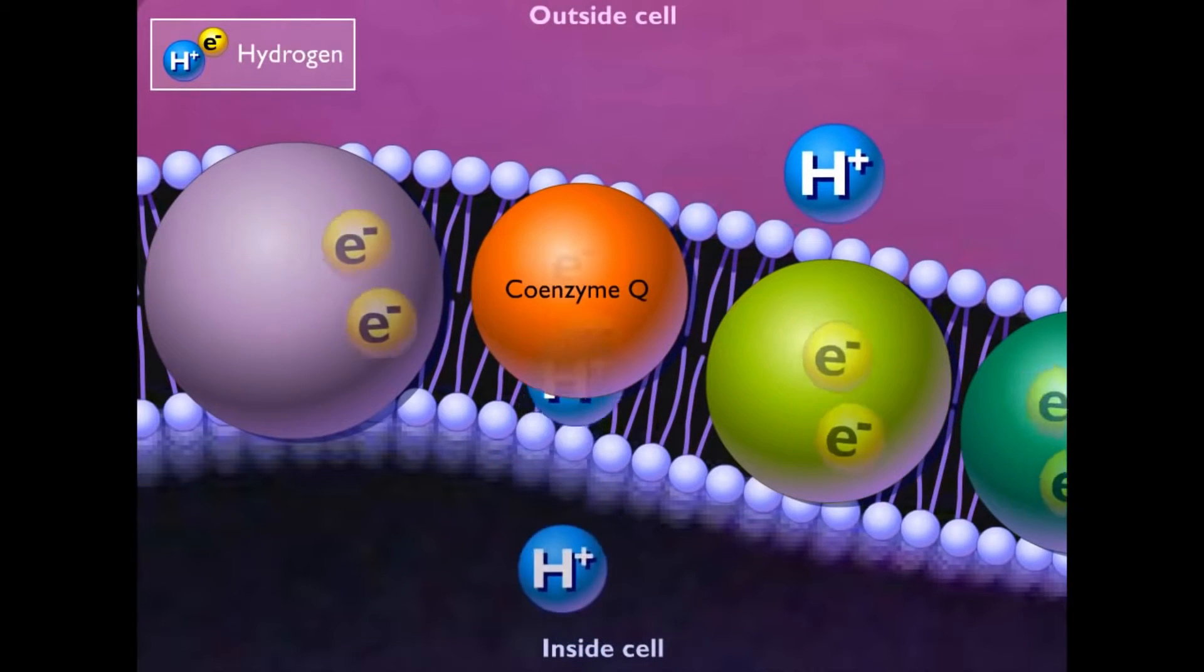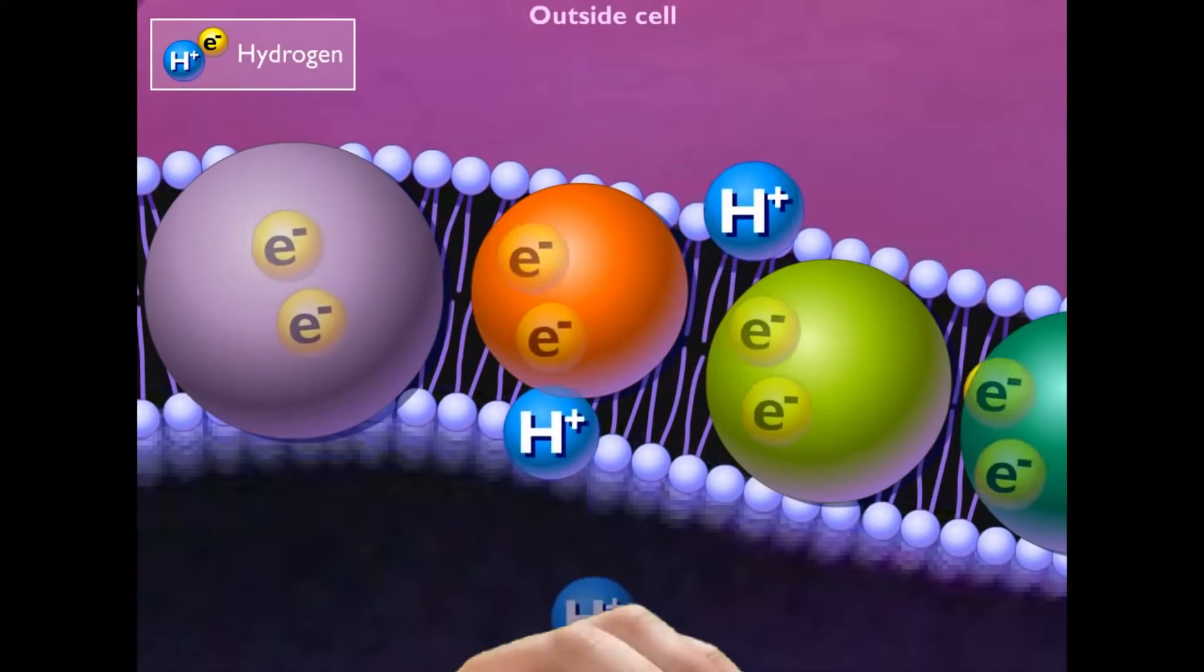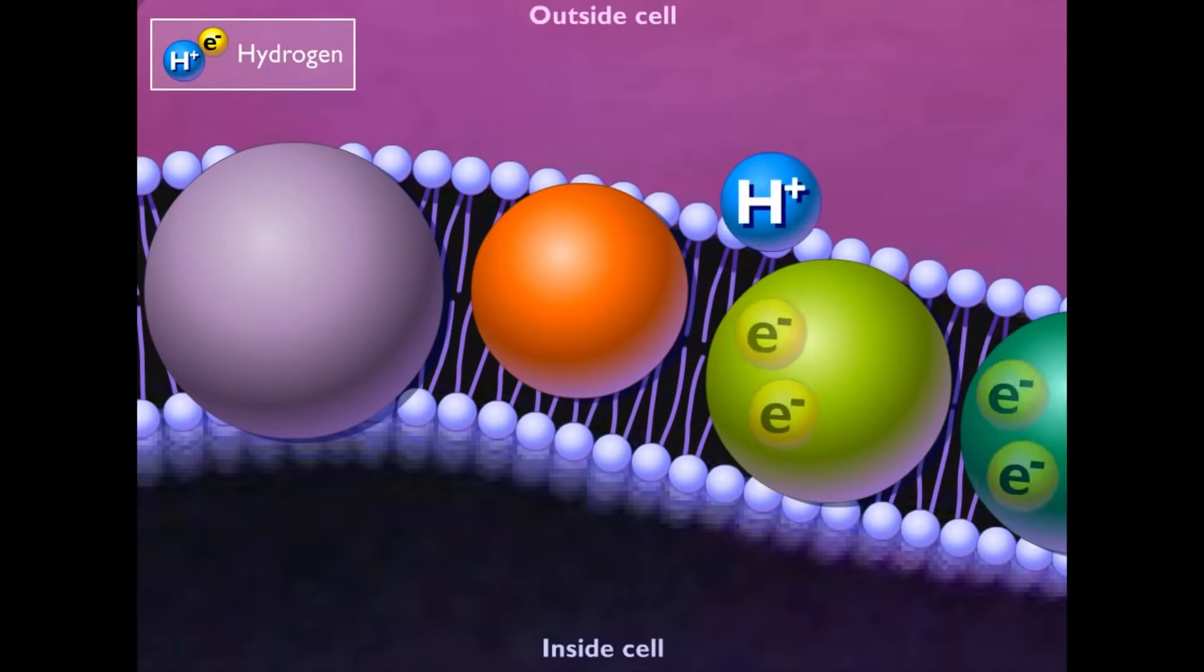The proton is then transported through the membrane as electrons move down the chain. This increases the proton gradient across the membrane and enhances the proton motive force.